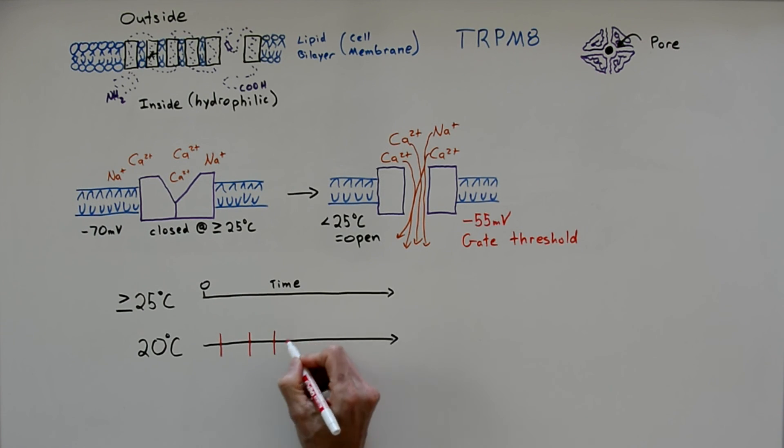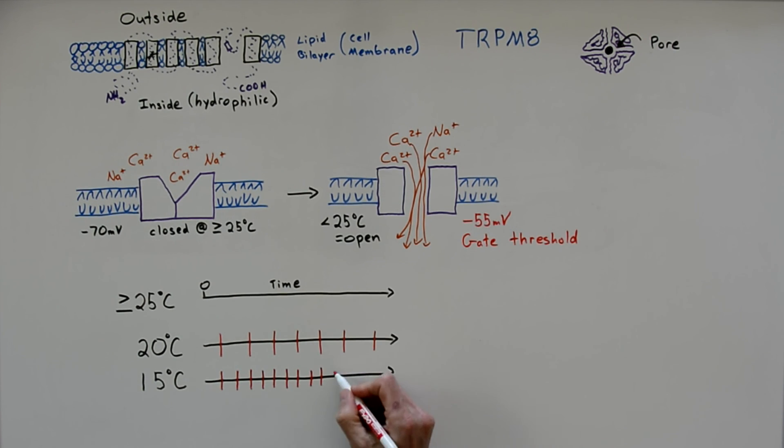So if the temperature is lowered, let's say 20 degrees Celsius, you start getting action potentials. And these will have a certain frequency. If the temperature is lowered even further, say 15 degrees, the frequency of these action potentials will increase. And this is how the brain figures out how cold something is, the frequency of the action potentials starts increasing the lower the temperature gets.